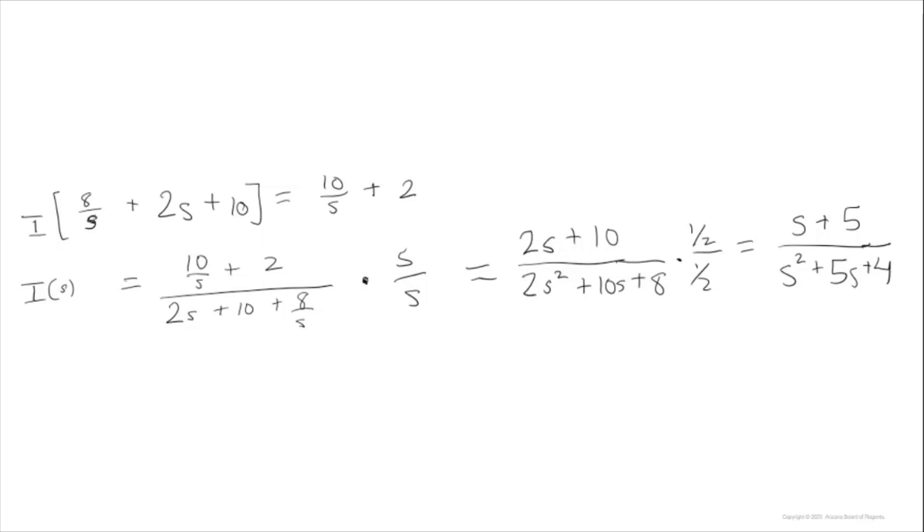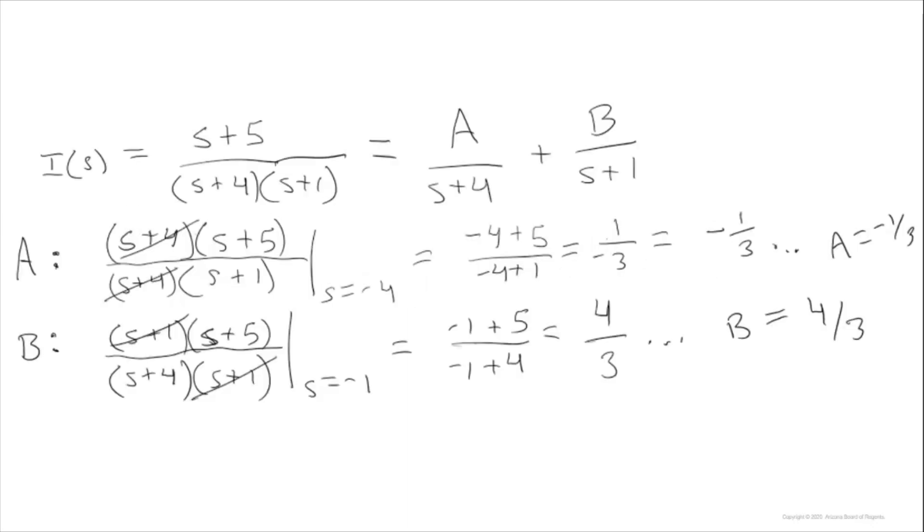Let's do some algebraic manipulation to make I of S easier to solve. We will multiply by S over S to get rid of those S's in the denominator and then multiply by 1 half over 1 half to make the bottom term easier to factor. We can now easily factor the bottom into S plus 4 times S plus 1 and now we can break I of S up into partial fractions.